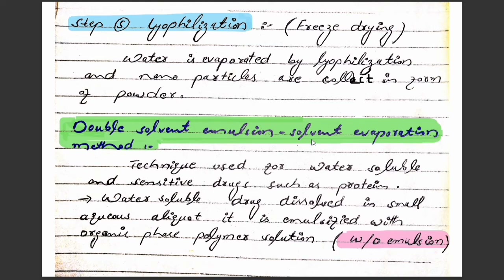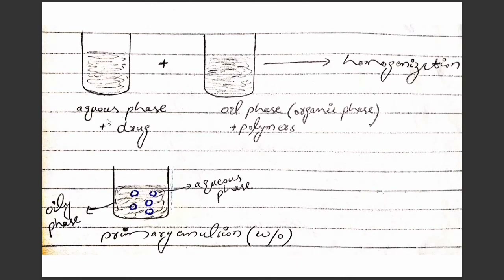The double emulsion solvent evaporation technique is used for water-soluble and sensitive drugs, such as proteins. In this method, first we prepare an aqueous solution by adding the drug to water. Then we emulsify this aqueous solution with an organic phase prepared from polymers, to get a water-in-oil primary emulsion.